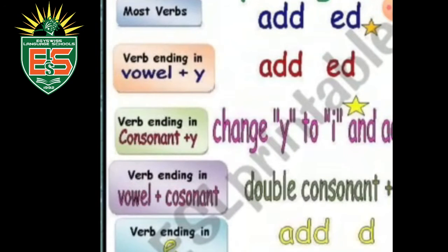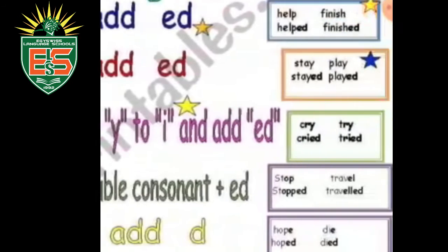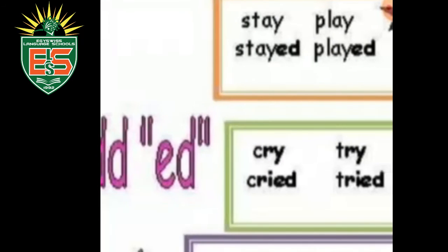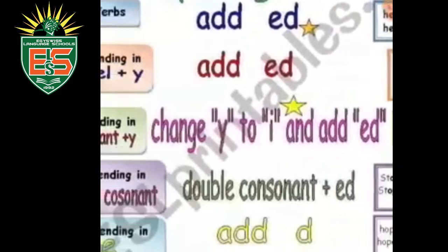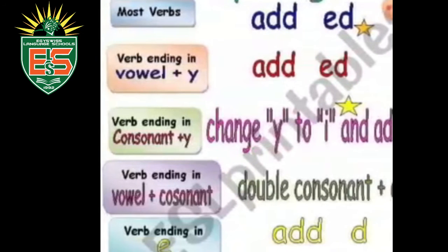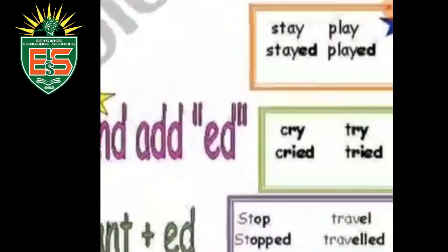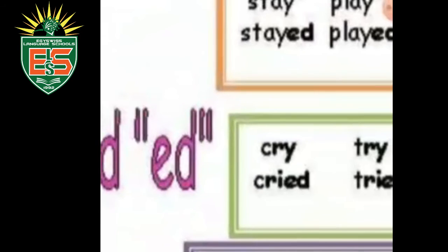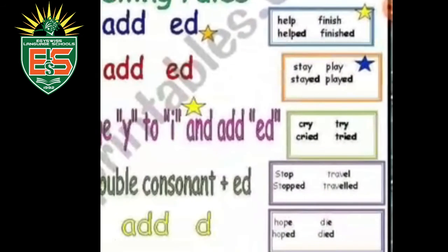Here are the spelling rules for simple past tense. Rule one: most verbs add -ed. For example: 'help' → 'helped', 'finish' → 'finished'. Rule two: verbs ending in a vowel plus -y, add -ed. For example: 'stay' → 'stayed' (vowel 'a' before -y), 'play' → 'played'.